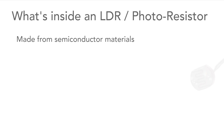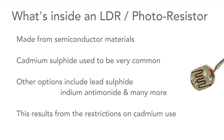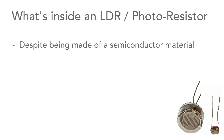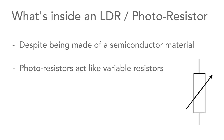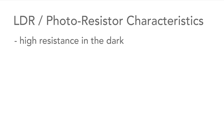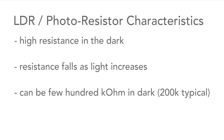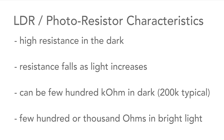LDRs are made from a semiconductor material. Cadmium sulphide was probably the most common, but other materials like lead sulphide and indium antimonide are being used, especially because of the restrictions on the use of cadmium these days. Even though LDRs are made from a semiconductor material, they are still resistors and don't act like diodes or transistors. They have a high resistance in the dark, but the resistance falls as the light level increases.